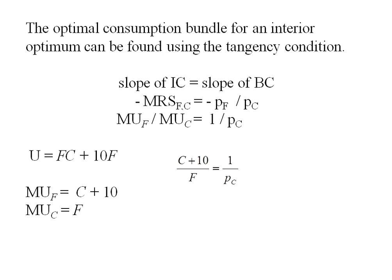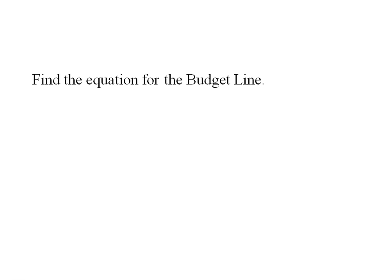I'm going to solve for one of the variables — whichever one is the easiest. In this case it's easiest to solve for F. Essentially I'm just cross multiplying, and this gives one of the equations I'll use to ultimately find the demand equation. The other equation is the budget line: 100 equals 1 times F plus PC times C.